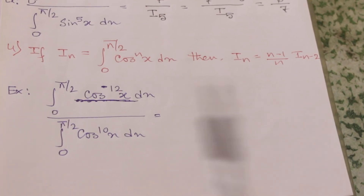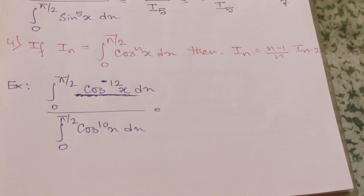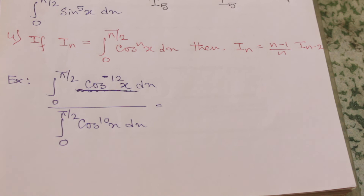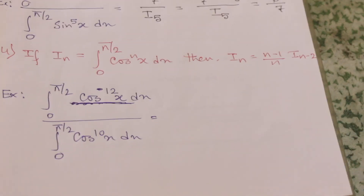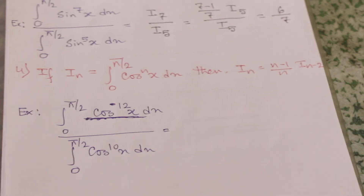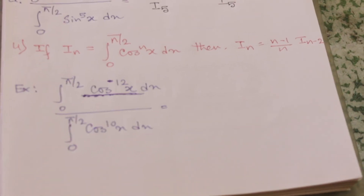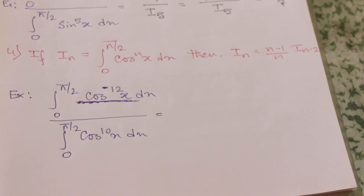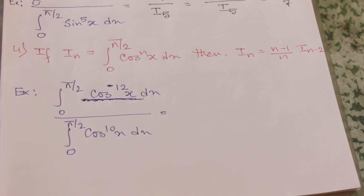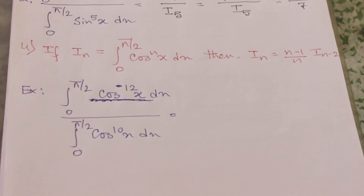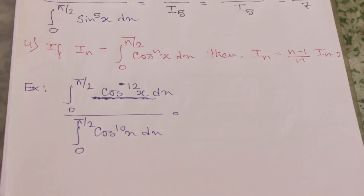A similar shortcut exists for cosine: if I_n = integral from 0 to π/2 of cos^n(x) dx, then I_n = (n-1)/n · I_(n-2), where n is any integer.